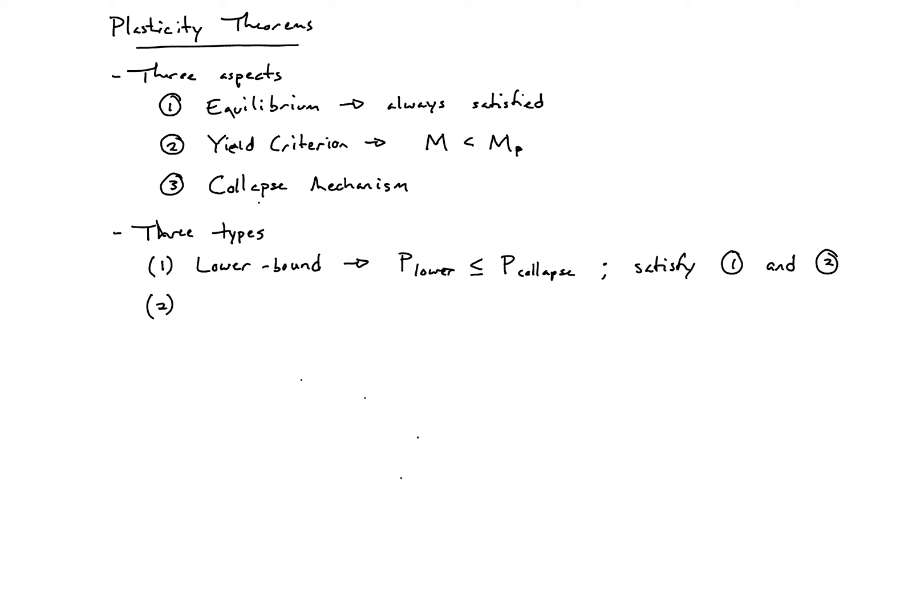The second type is an upper bound theorem. In an upper bound theorem, our P that we would predict will always be greater than or equal to our actual collapse load. You can note that if we don't have the exact collapse load, then we're going to have an unconservative estimate.